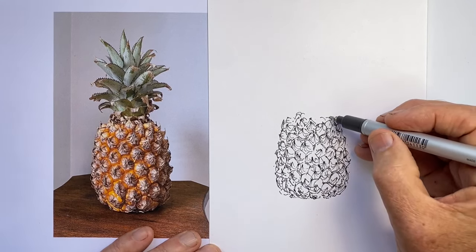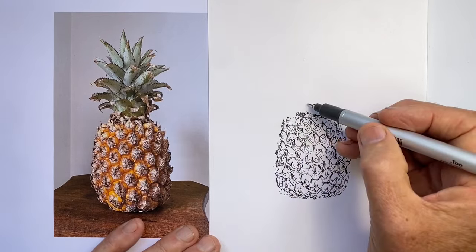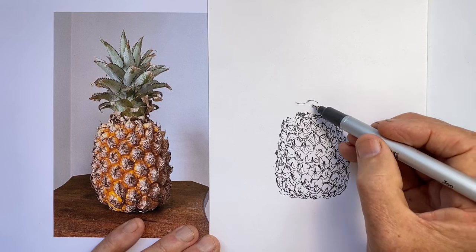If you want to see me draw it real-time, just use that cog icon that you can see on the screen, and reduce this to half-time, and then you'll watch me draw it in real-time. And so, now I get the crown of the pineapple.